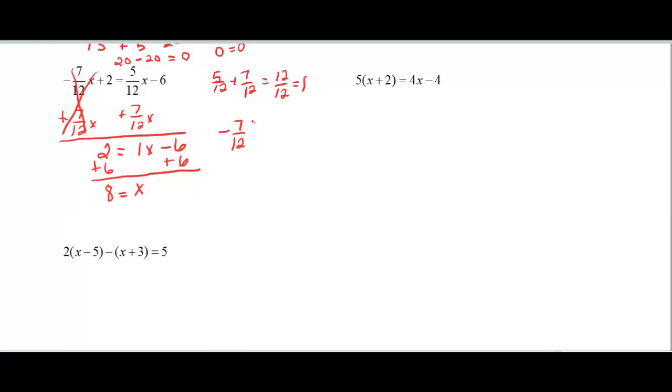Negative 7 over 12 times 8 over 1, if you like fractions, plus 2 is equal to 5 over 12 times 8 over 1 minus 6. Now we multiply, so negative 56 over 12 plus 2 is equal to 40 over 12 minus 6. I've got to make this 2 a fraction. So minus 56 over 12, I have to multiply by 12 over 12, so I can get a denominator of 12 here.